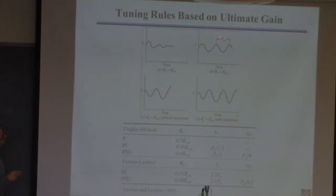Eventually, you get to a KC where these oscillations are sustained, and that's called the ultimate gain, KCU. And associated with that will be the period of the oscillations, for lack of a better term, called PU.